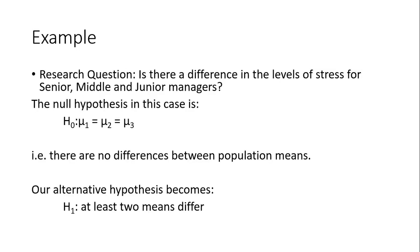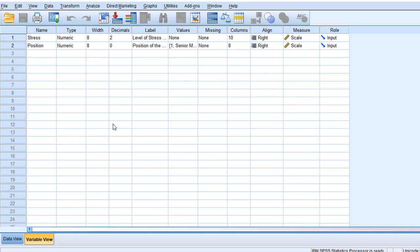Research question ہے: Is there a difference in the levels of stress for senior, middle, and junior managers? Null hypothesis H0: μ1 = μ2 = μ3 — یعنی تینوں groups کے means میں differences نہیں ہے۔ Alternative hypothesis H1: at least two means differ — یعنی کم سے کم دو groups کے means آپس میں مختلف ہیں۔ ہم SPSS میں check کریں گے جہاں variables 'stress' اور 'position' ہیں۔